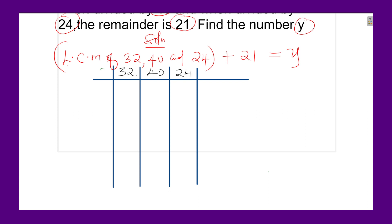So we begin by dividing everything by 2. We get 16, 20, and 12. Divide everything by 2 again. You get 8, 10, and 6. Everything by 2 again. We get 4, 5, and 3. We divide by 2 again. We get 2 there, 5 there, and 3.